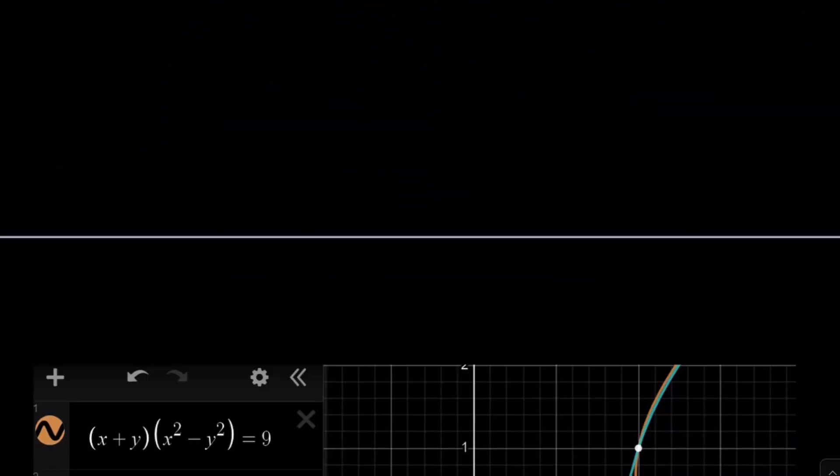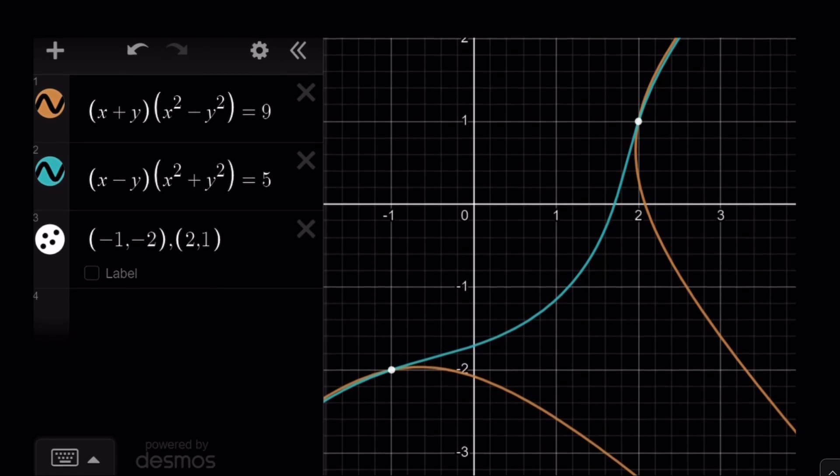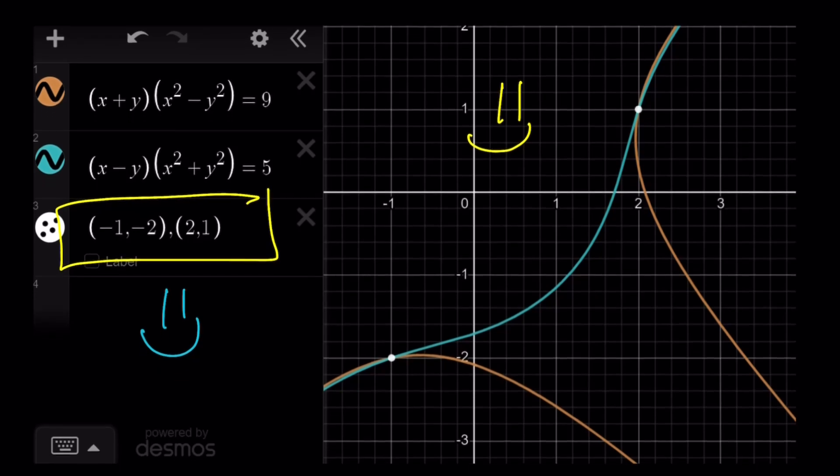And now we're going to look at the graph. So, I graphed these two relations for you. And they are pretty interesting. So, they are very curvy. And they do intersect at two points, which shouldn't be a surprise, right? Yay! And this brings us to the end of the video. Thank you for watching. I hope you enjoyed it. Please let me know. Don't forget to comment, like, and subscribe. I'll see you next time with another video. Until then, be safe. Take care and bye-bye.